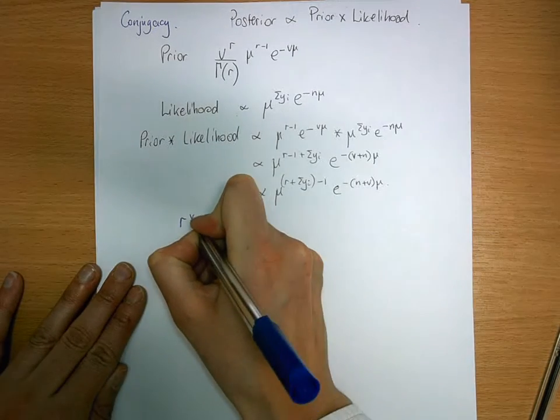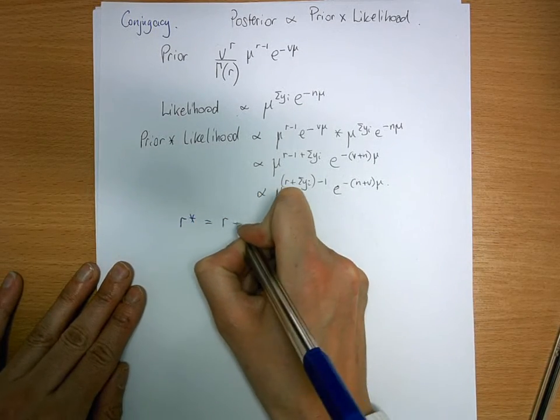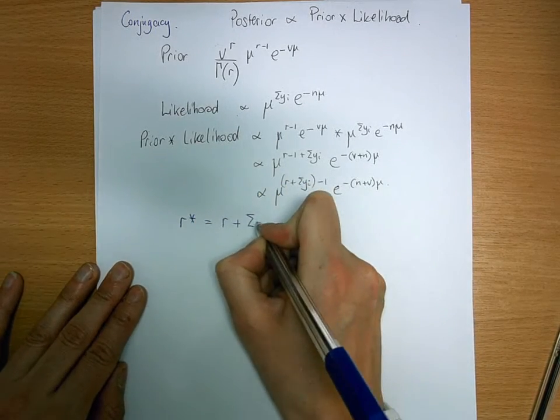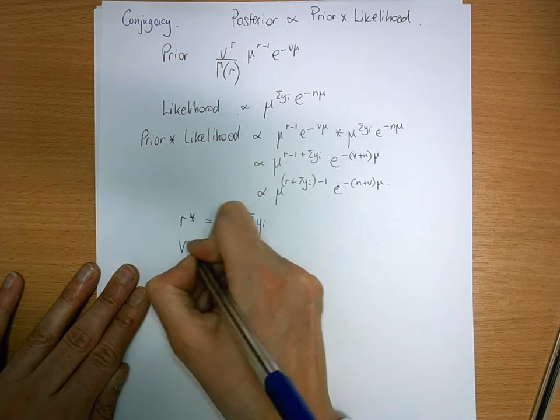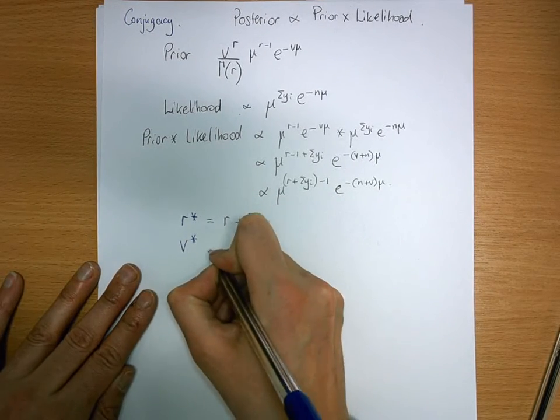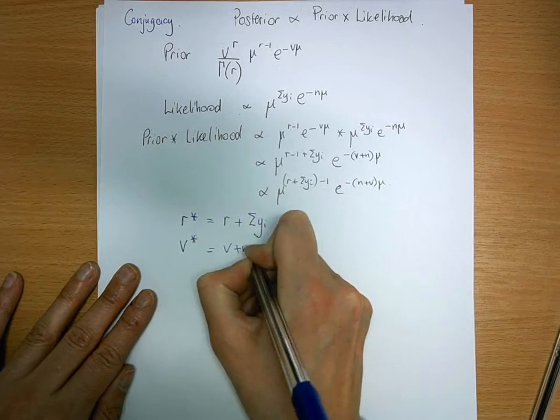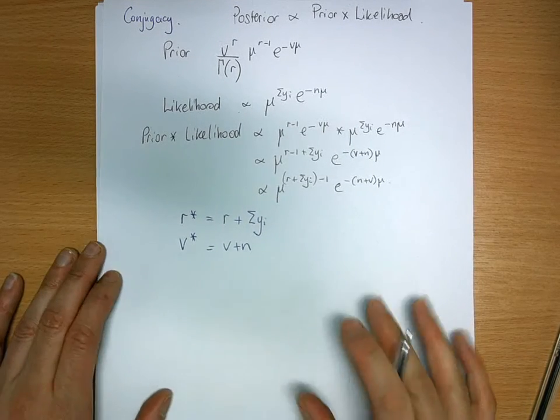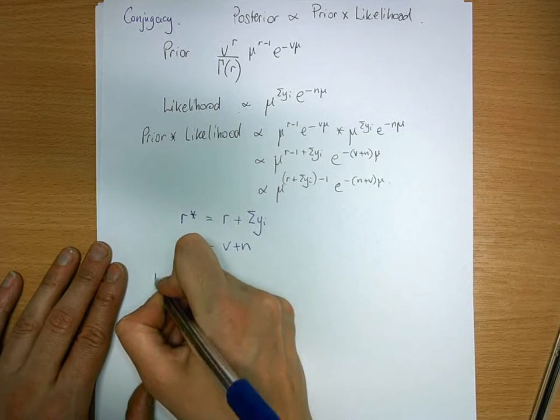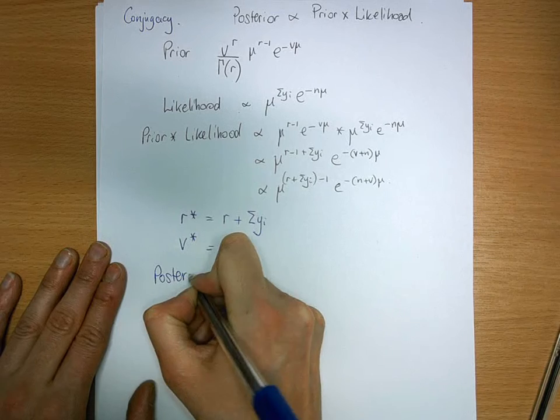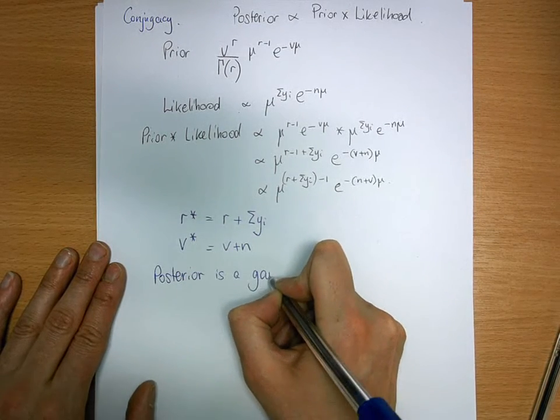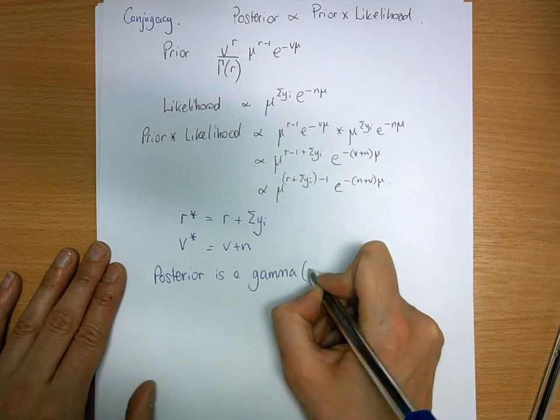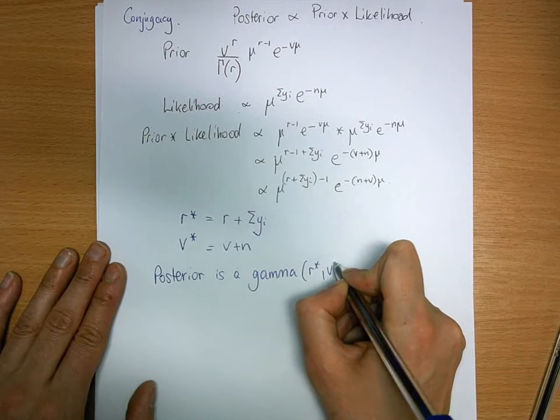I'm going to say my new parameter r star equals r plus the sum of yi. My new v star is v plus n, and then I can say my posterior is a gamma r star, v star.